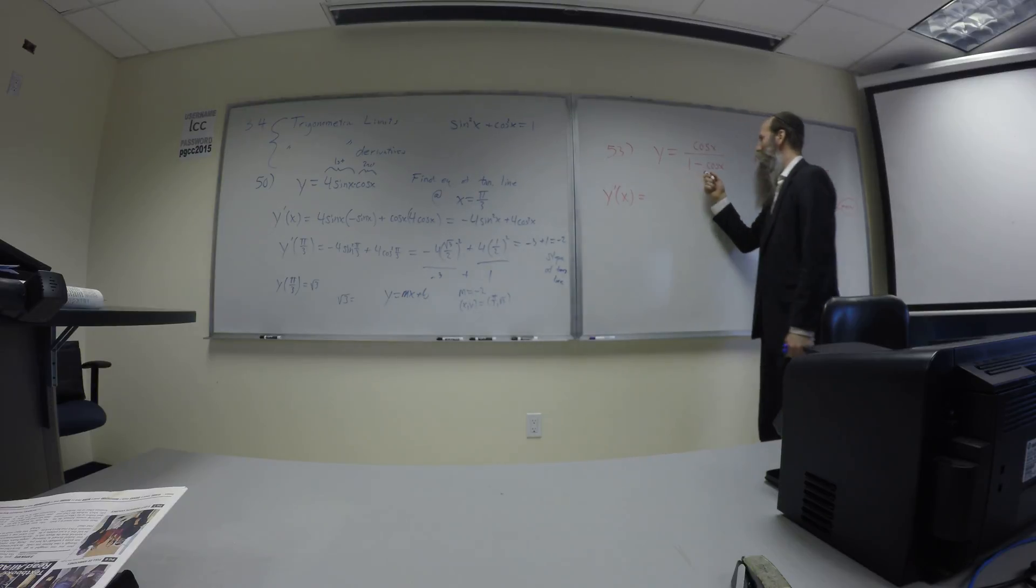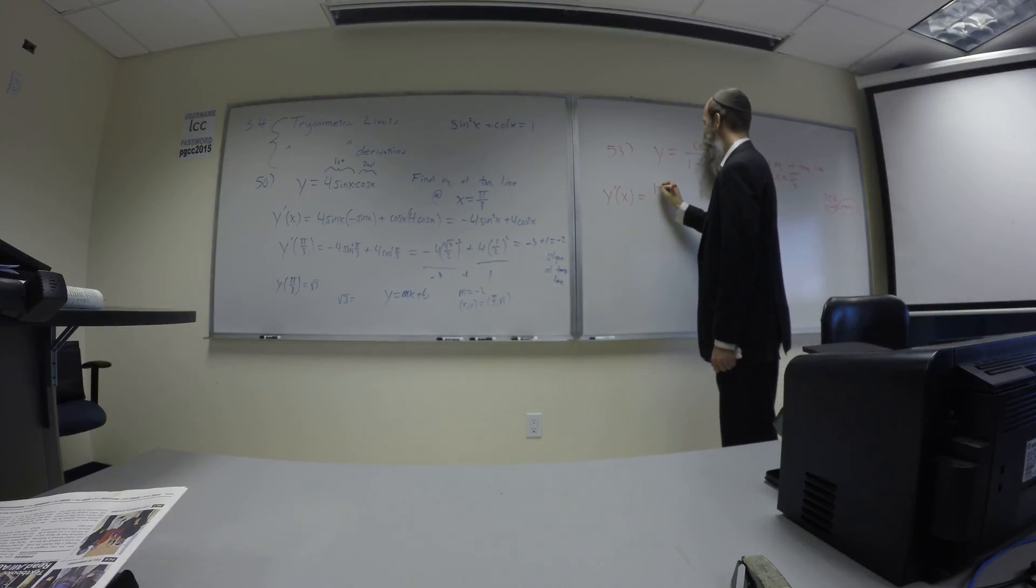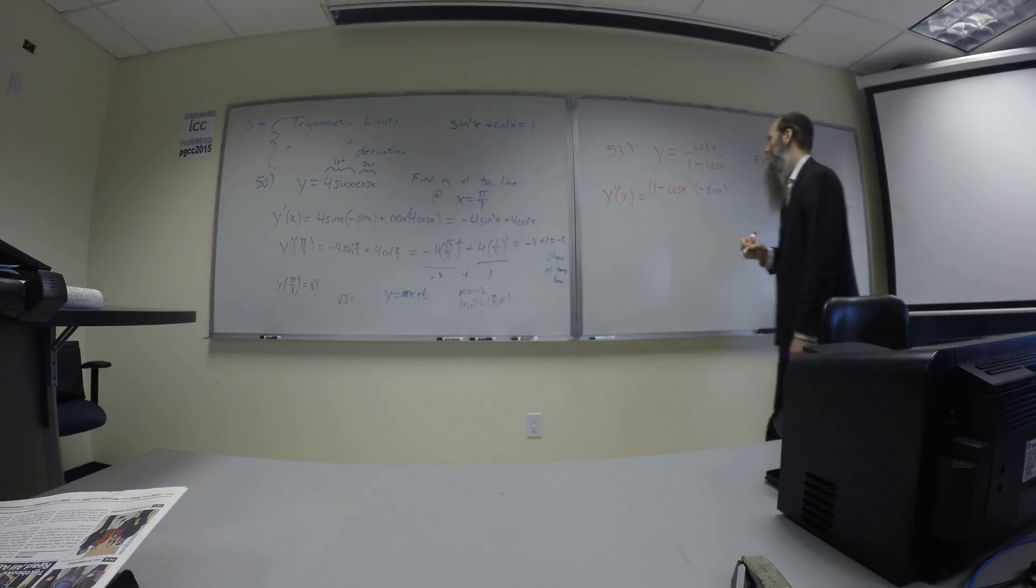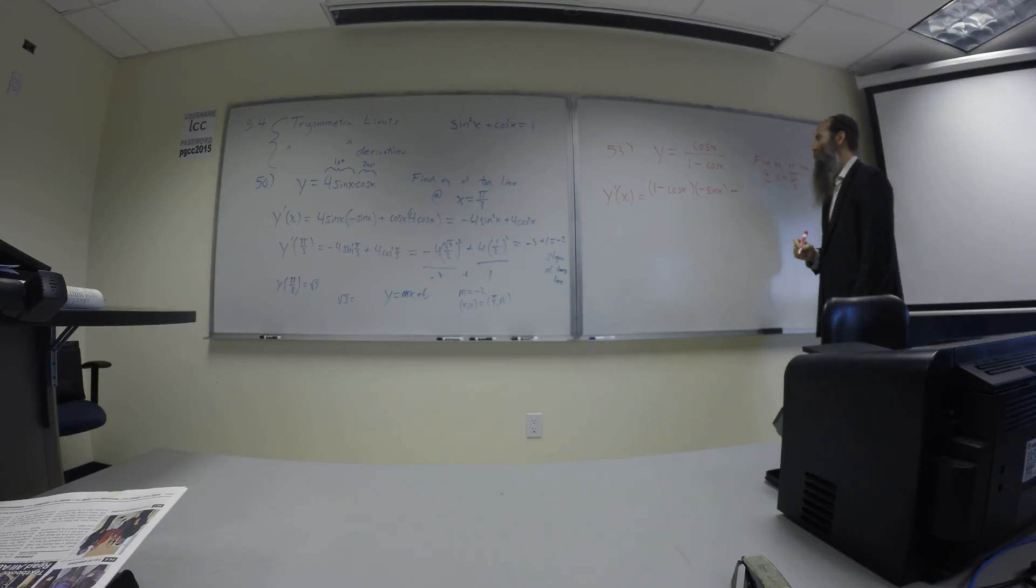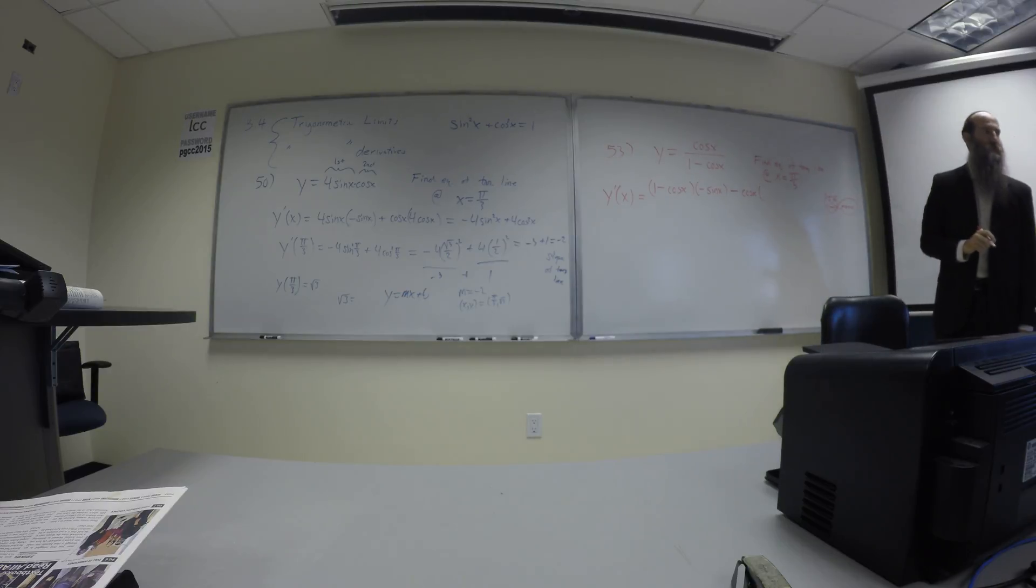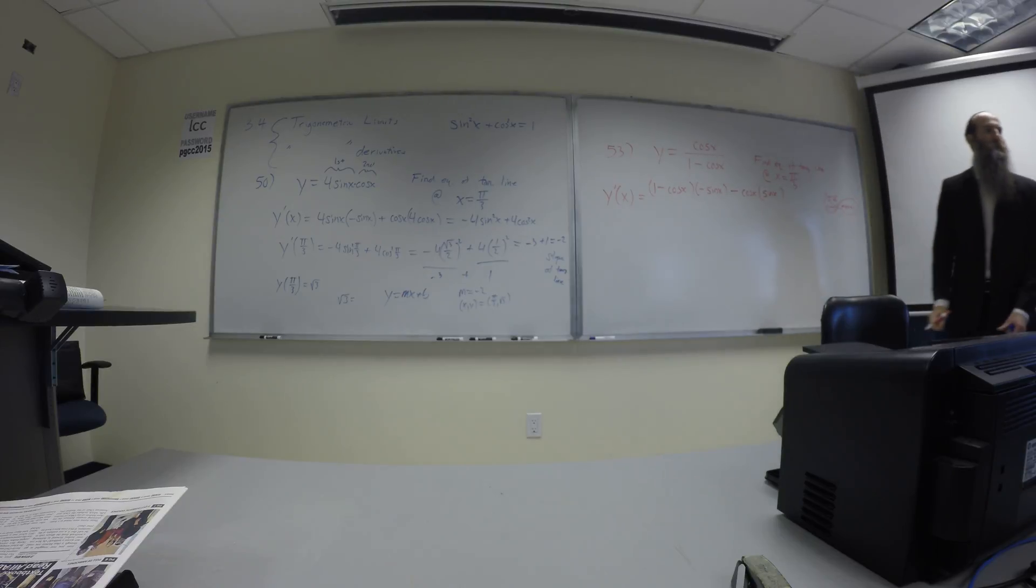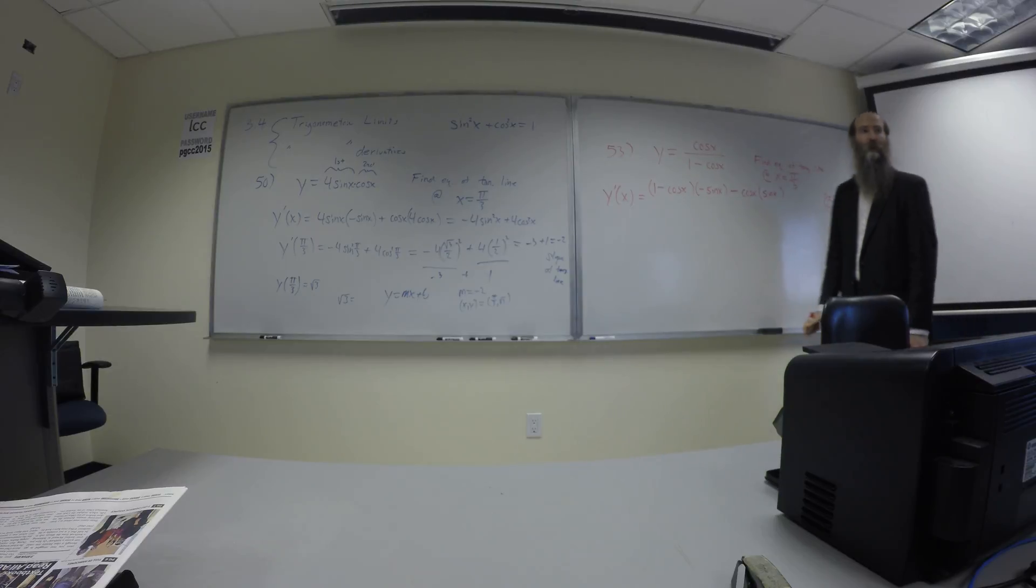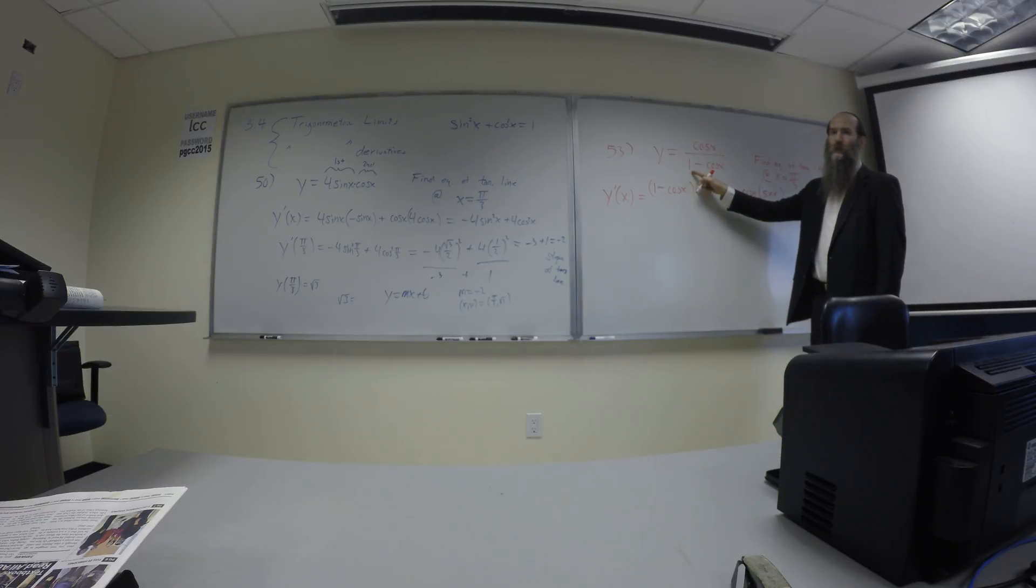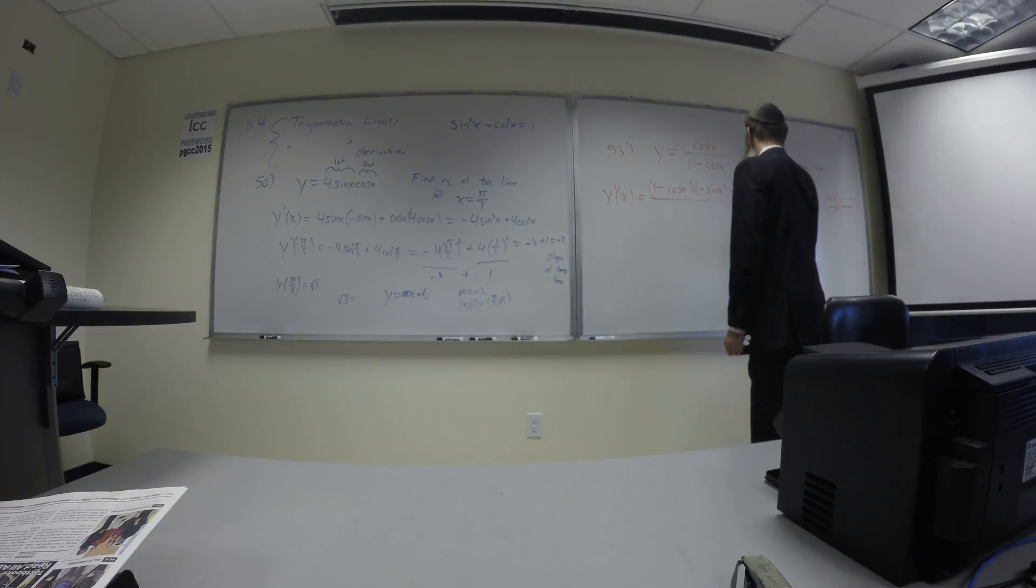The derivative is going to entail a quotient rule. So bottom, one minus cos x, times the derivative of the top, negative sine x, minus, do the quotient rule, top, cos x, times the derivative of the bottom. What is the derivative of one minus cos? Sine x. Right? The derivative of one minus cos is sine x. Agreed? Because the derivative of one is zero, the derivative of cos is negative sine, coupled with that negative makes it positive. Okay. Bottom, one minus cos, quantity squared.